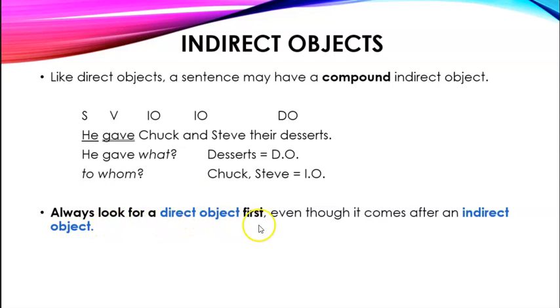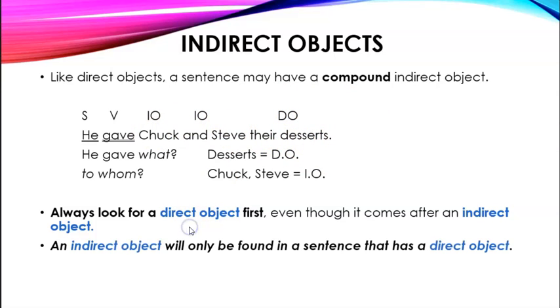You always have to look for the direct object first, even though it comes after the indirect object. And that's because you can't give something to someone if you don't have it. You can't give Chuck and Steve a dessert if you don't have the dessert. So you'll only ever have an indirect object if you already have a direct object.